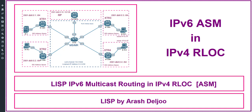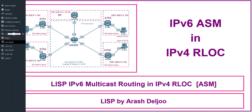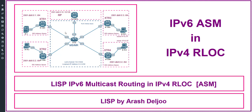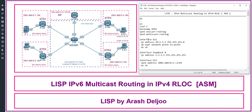Because of that, as you can see here, I'm using IOS XE with a version greater than 16.2. Because of that, we can configure IPv6 ASM in IPv4 RLOC space.